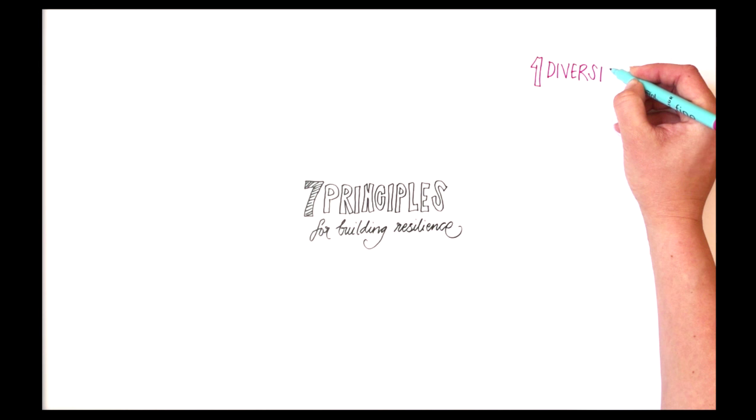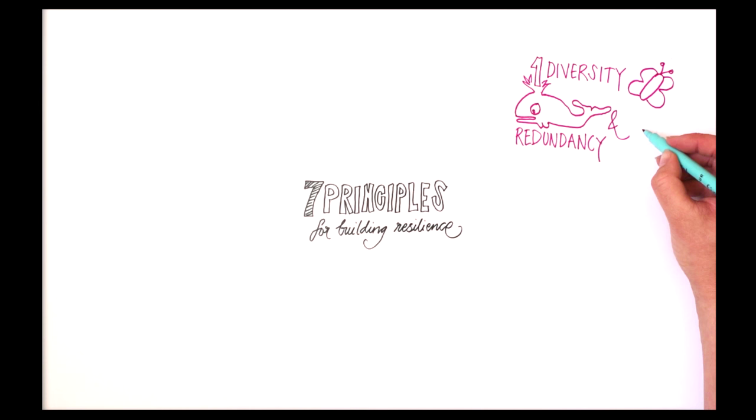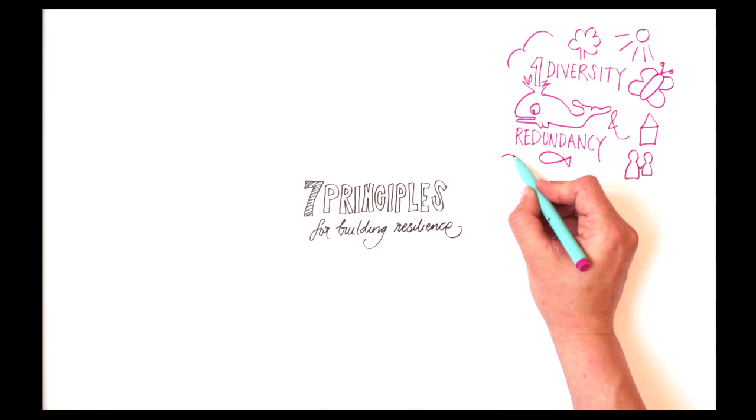Principle 1: Maintain diversity and redundancy. Systems with many different components, be they species, actors, or sources of knowledge, are generally more resilient than systems with few components. Diversity allows some components to compensate for the loss or failure of others.